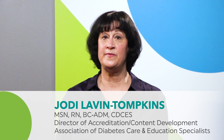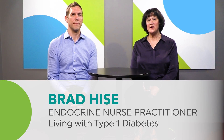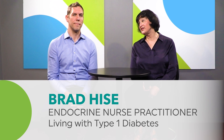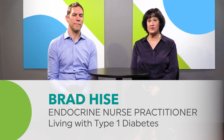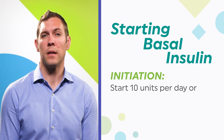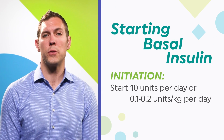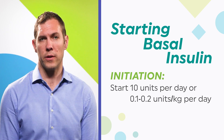Insulin doses may need to be adjusted over time to achieve target glucose levels. I'm here with Brad Heise, an endocrinology nurse practitioner living with type 1 diabetes. He'll help us understand the best ways to start and titrate basal insulin. The American Diabetes Association recommends starting basal insulin at 10 units per day or 0.1 to 0.2 units per kilogram per day.